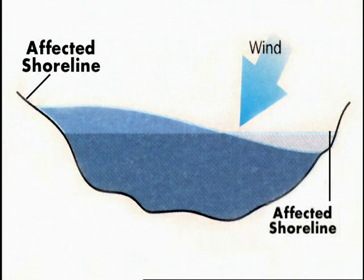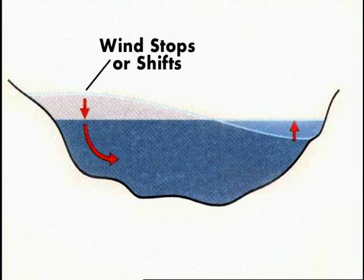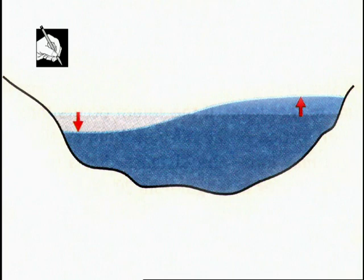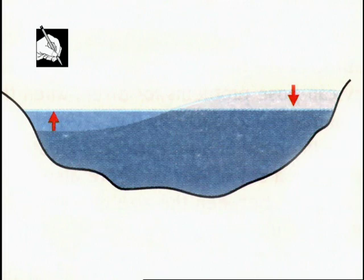When the surface of a large, partially enclosed body of water is disturbed, long waves may be established. These waves, called seiches, have a period that depends on the size and depth of the basin. Seiches can affect diving by reducing visibility and by rapidly changing the water level at entry and exit points.